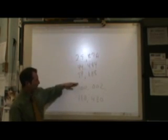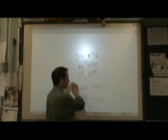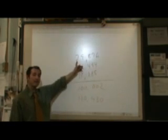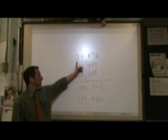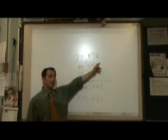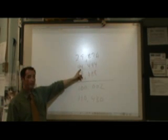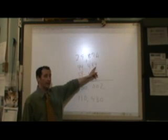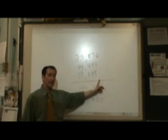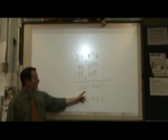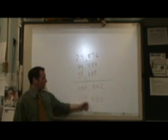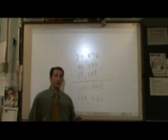Alright, well here we are in the world of six-digit numbers. Let's go ahead and read these five-digit numbers. 29,876. 44,444. 99,888. 100,002. 110,430.